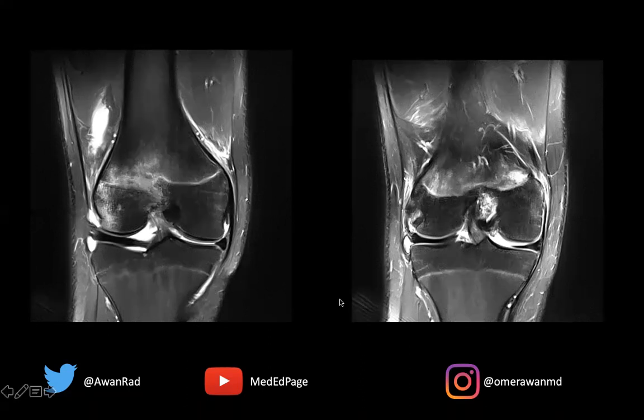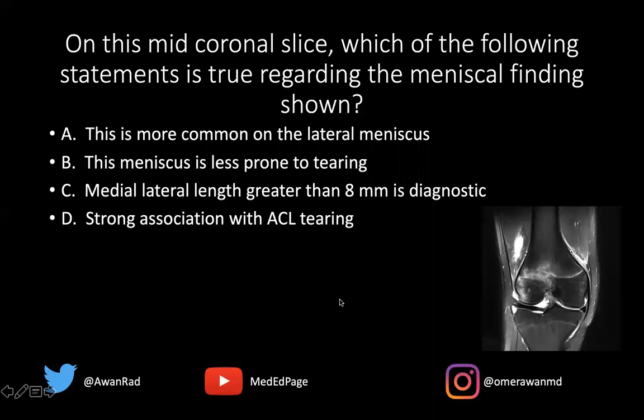The question I have for you is: on this mid-coronal slice, which of the following statements is true regarding the meniscal findings shown? A) This is more common on the lateral meniscus. B) This meniscus is less prone to tearing. C) The medial to lateral length is greater than 8 millimeters — that's diagnostic. Or D) Strong association with ACL tearing. Which statement is true?